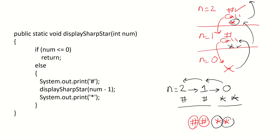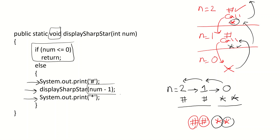The code is as follows: base case — if num equals 0, 'return;' (semicolon because it's a void method, we can't return a value). If it is not 0, first display sharp, then call 'displaySharp(num - 1)', then display star. This ordering — sharp before the call, star after the call — ensures that all sharps are displayed first during the descent, and then all stars are displayed on the way back up. That way we get all the sharps and then all the stars.